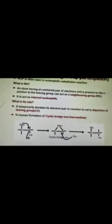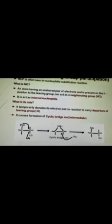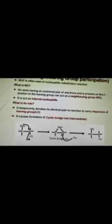How does that neighboring group play its role? How does it allow departure of the leaving group? How does it form the cyclic bridge ion? See that reaction. In that reaction, here is the neighboring group located at the beta position with respect to the leaving group. This is the leaving group. This is alpha-carbon and this is beta-carbon.